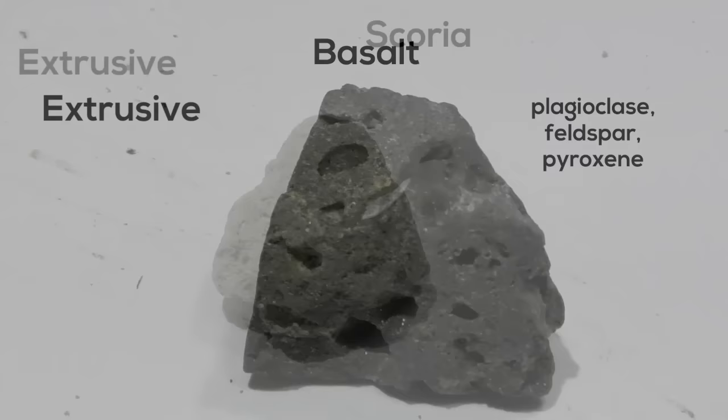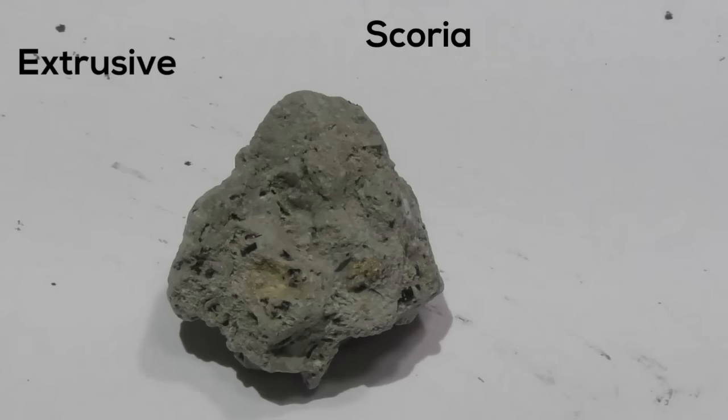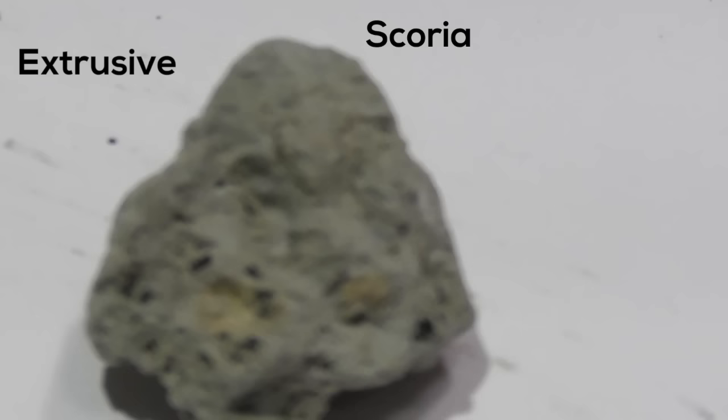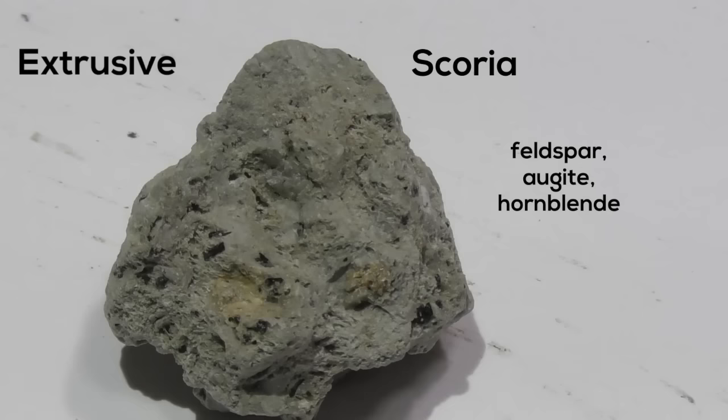Next, we have scoria. It's an igneous volcanic rock. It's made from feldspar, augite, and also hornblende. It is basalt with cavities filled with other minerals.